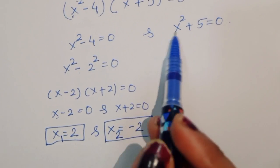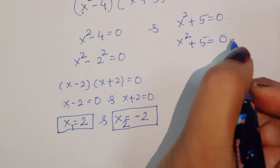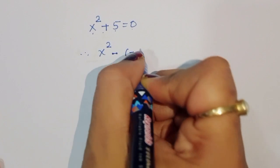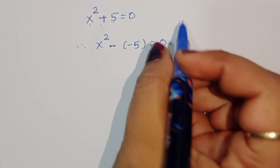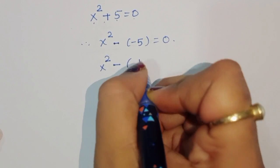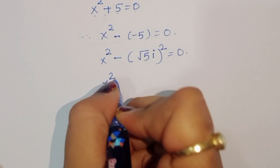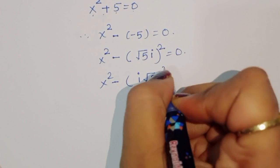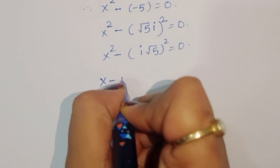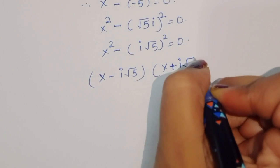For the second equation, x² + 5 = 0, we can write x² - (-5) = 0, or x² - (i√5)² = 0, since i² = -1. This is again a difference of squares form: (x - i√5)(x + i√5) = 0.